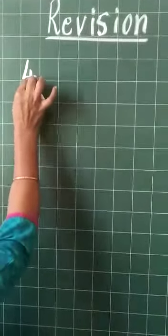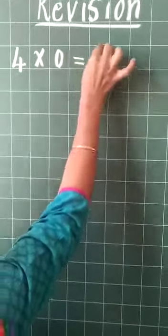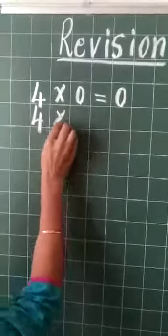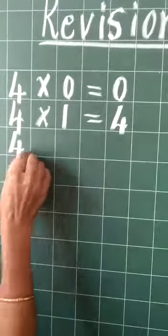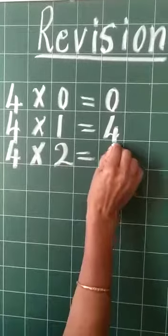I will write for you. 4 times 0 equals 0. 4 times 1 equals 4. 4 times 2 equals 8.